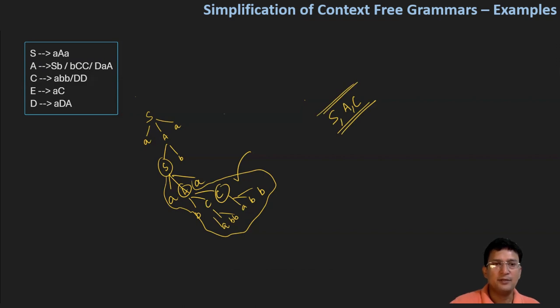Now consider this derivation: S produces small a, capital A, small a, and then A produces D, small a, capital A. You'd have D here, which expands... but D cannot reach any terminal symbol. B is also a non-generating symbol, so we need to eliminate it from the productions.